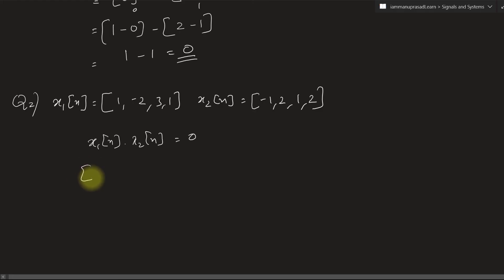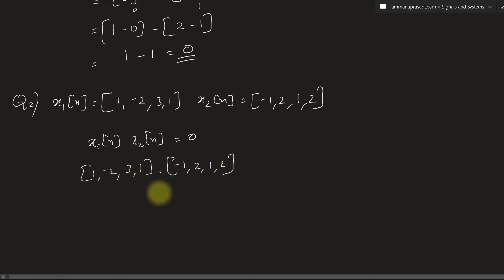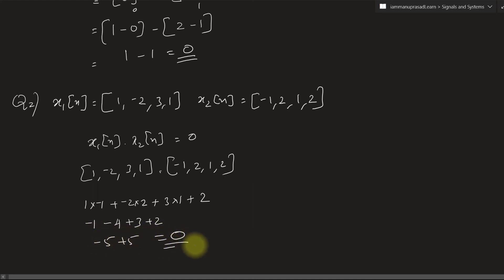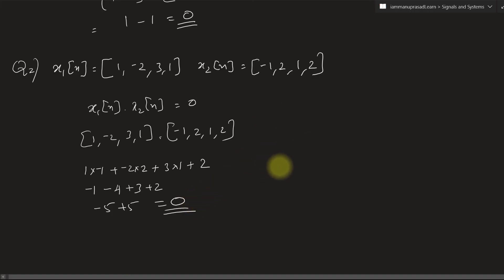Computing element by element: (1)(−1) + (−2)(2) + (3)(1) + (1)(2) = −1 − 4 + 3 + 2 = −5 + 5 = 0. Since the inner product equals 0, the given two signals are orthogonal signals.